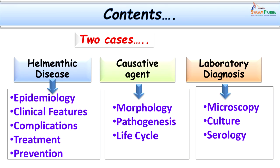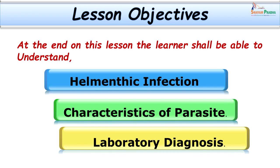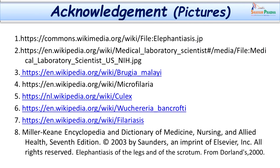So, we have covered this lesson under three headings: the details of filariasis, the parasite causing it — Wuchereria bancrofti — in detail, and the laboratory diagnosis. By doing this, I hope we have met the lesson objectives — we have understood the helminthic infection, parasite characteristics, and laboratory diagnosis. These are the references for the pictures used in this lesson. Thank you very much.